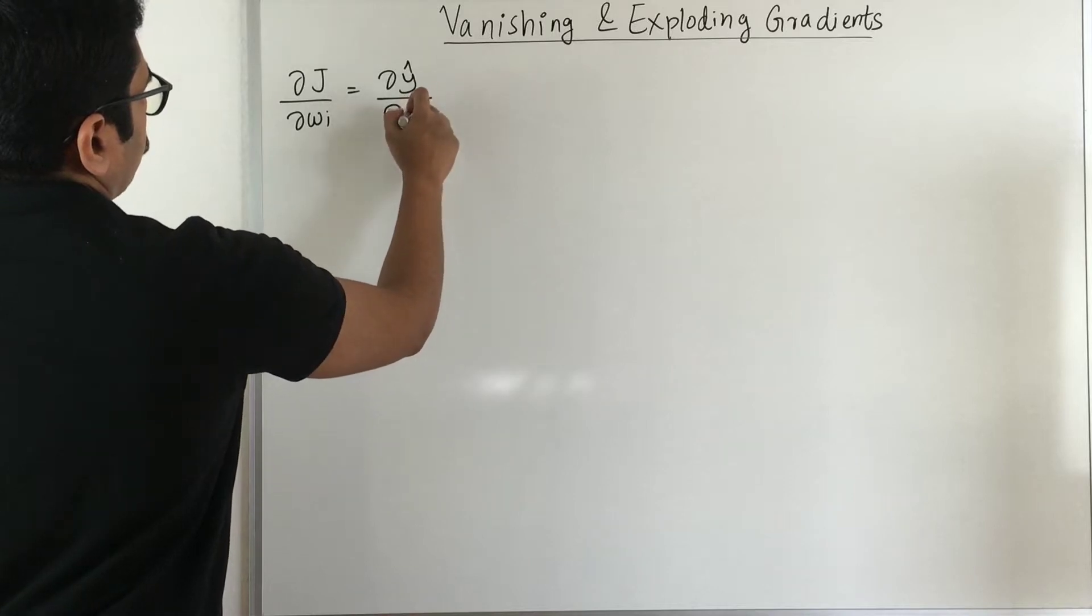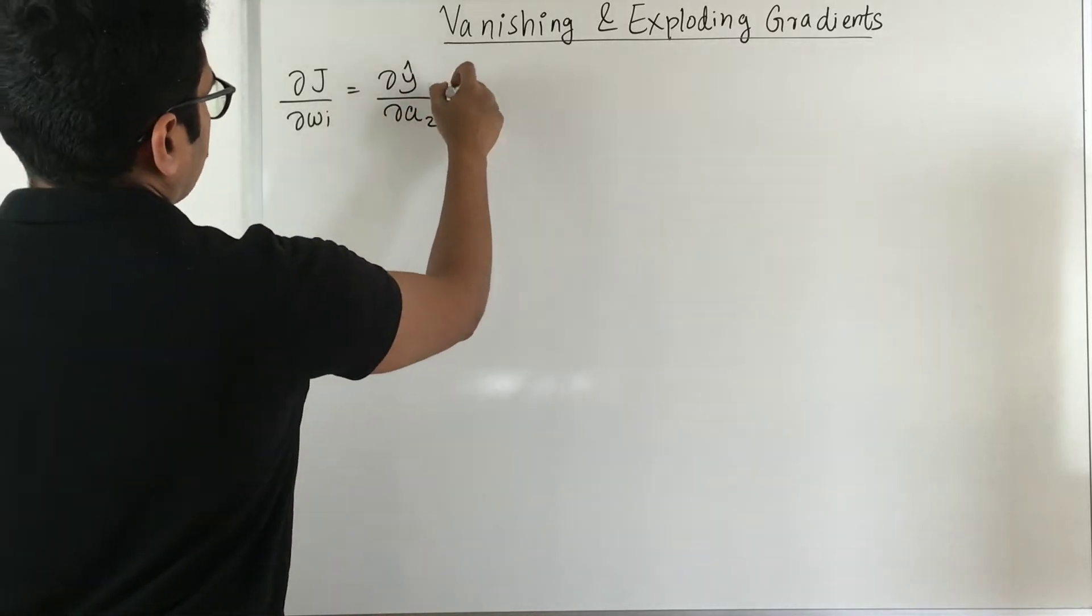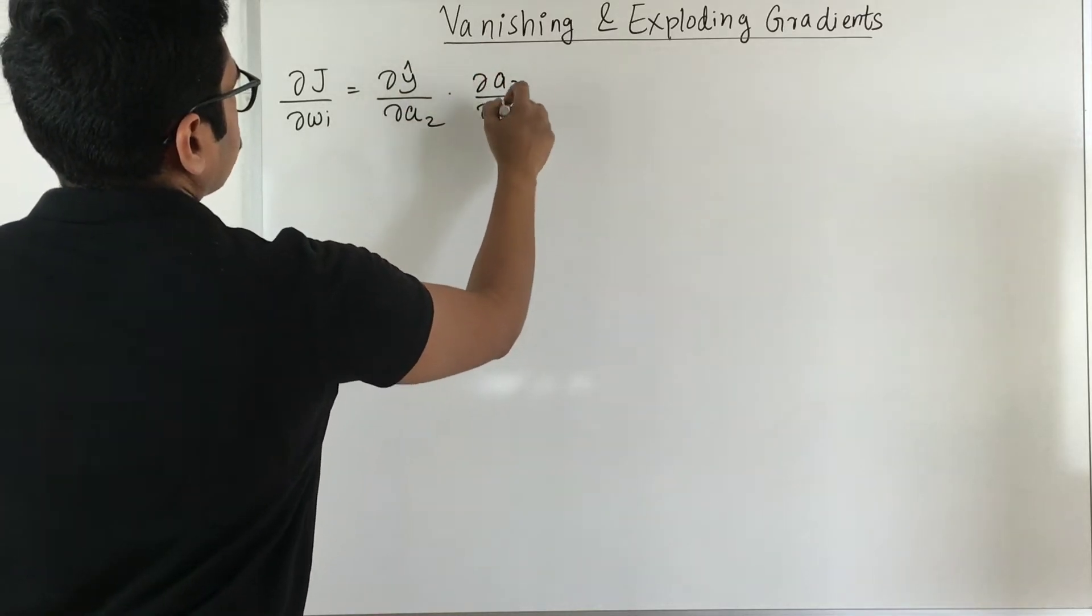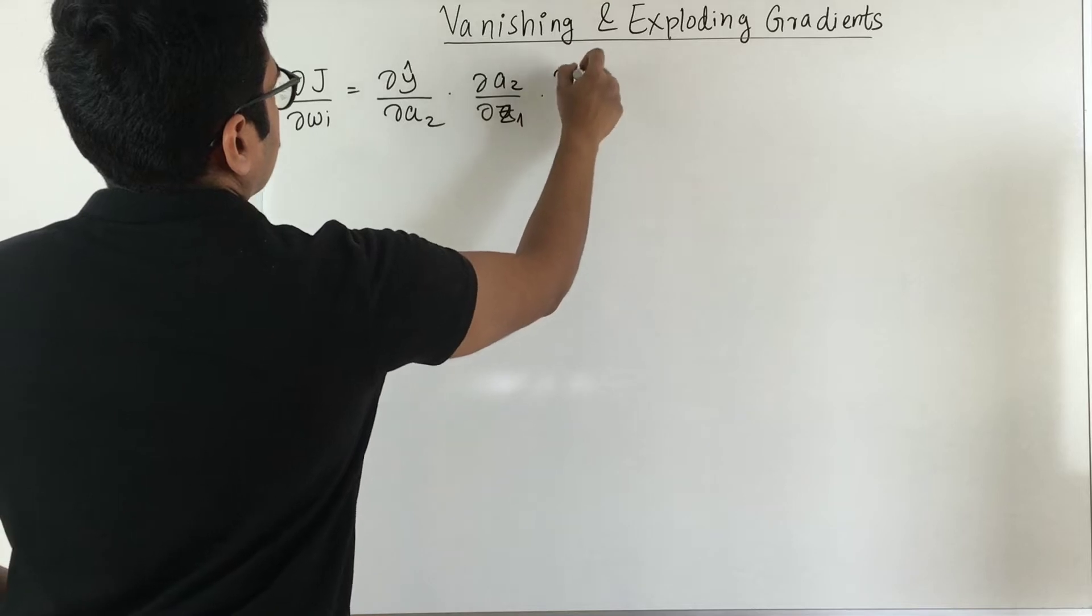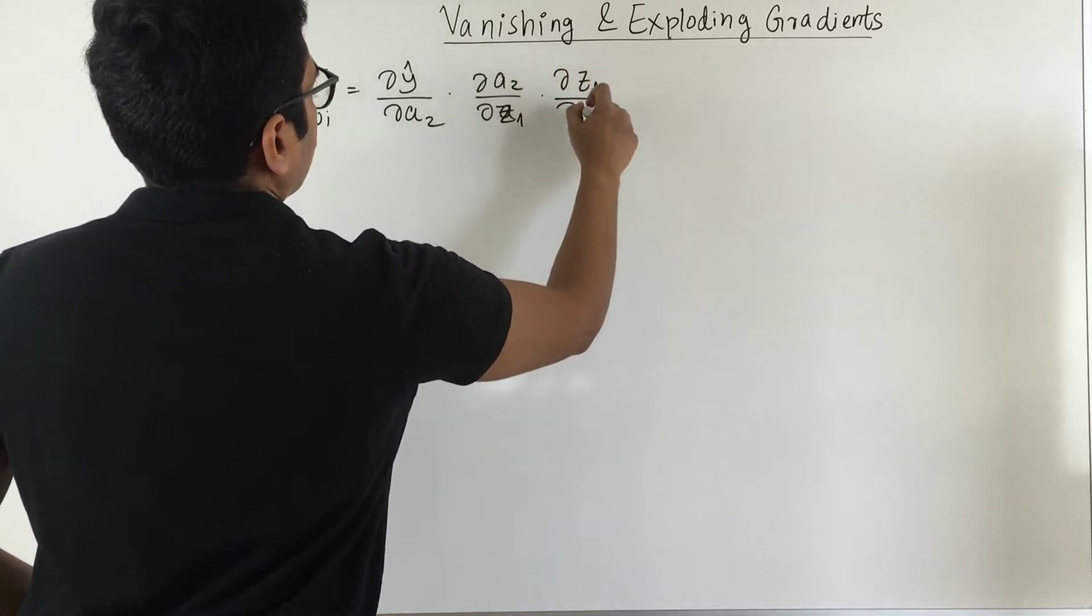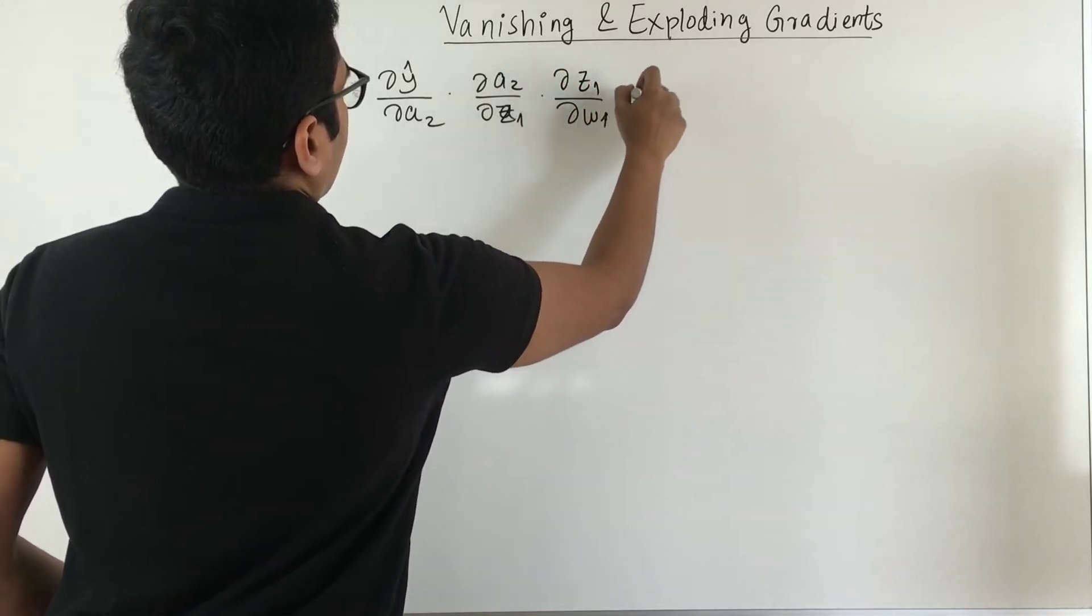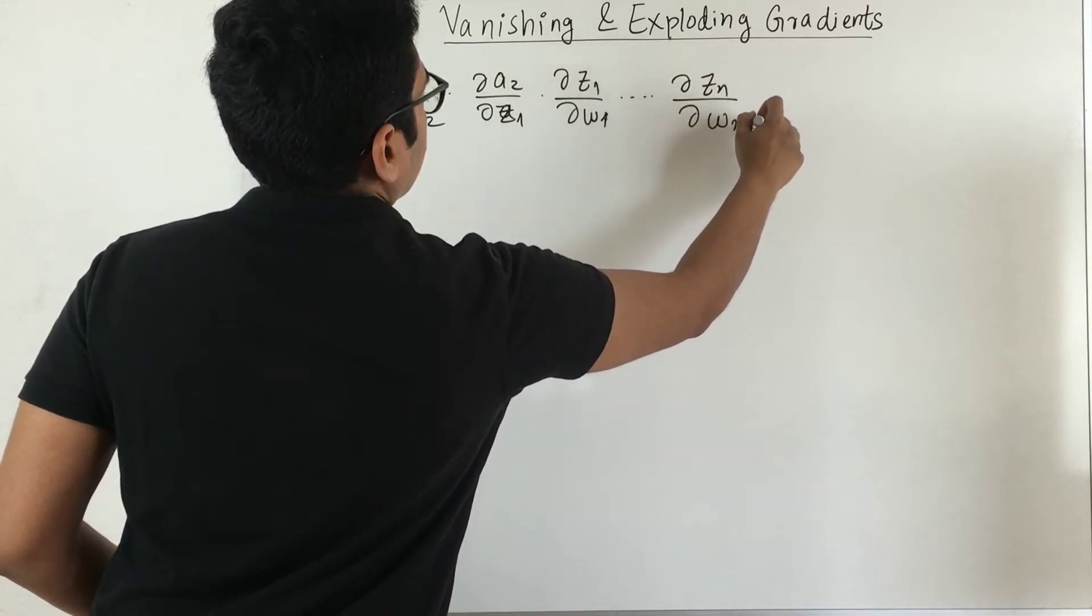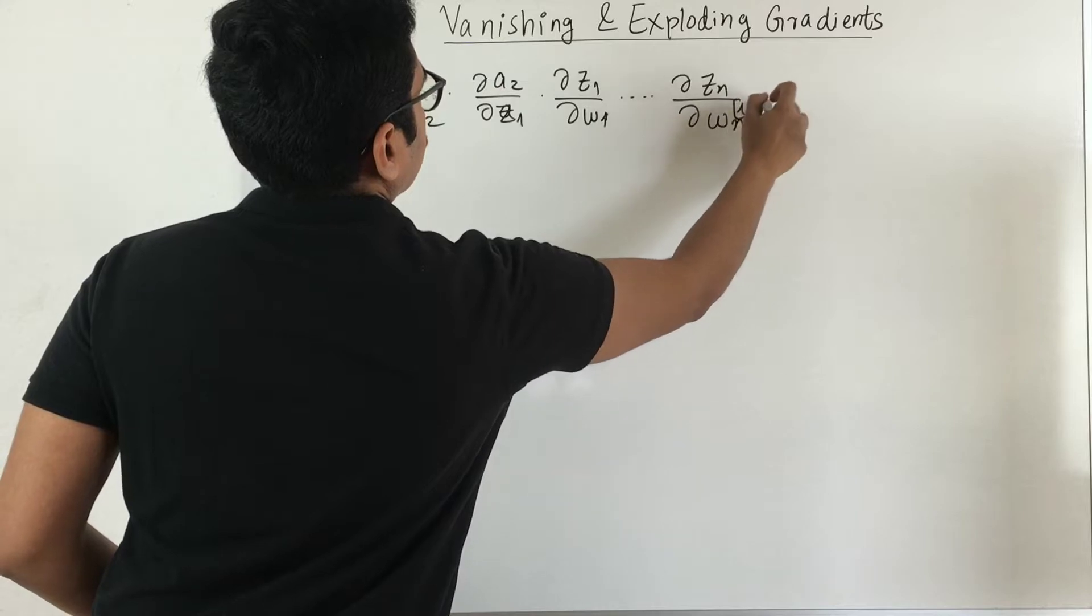Say our first layer is a2 which is going back and we have ∂a2/∂z1, then ∂z1/∂w1, and so on up till if you have n layers, ∂wn+1 up till this n-1 layers.